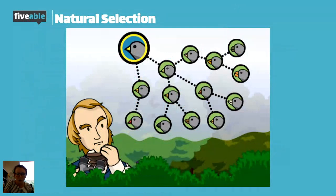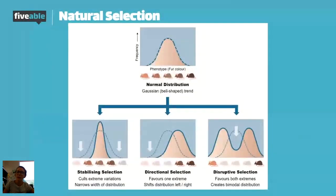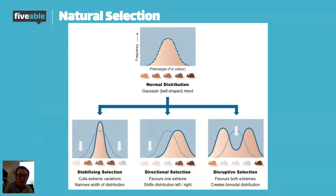I'm going to show you a couple of different types of selection that can occur. This graph shows the different ways we can select for or against traits depending on different environmental conditions. The top graph is your normal Gaussian bell-shaped curve of a starting population — in this case, mice — in which we see a strong increase in the middle phenotype, showing a gradient from lighter tan to darker brown, representing a normal distribution.